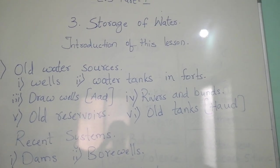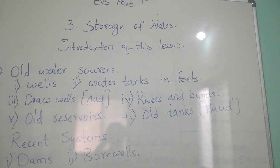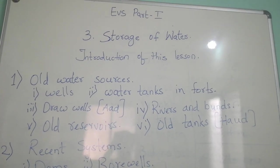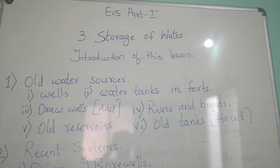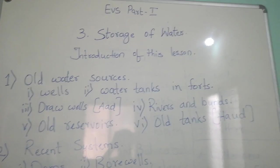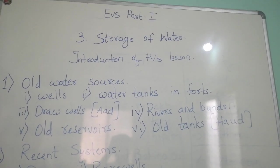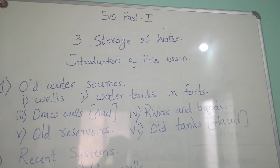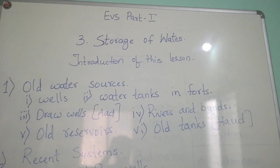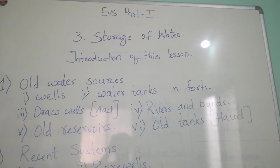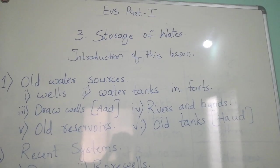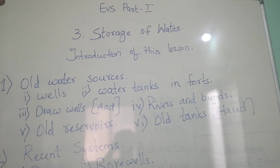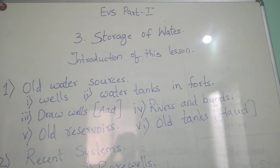The fourth one is rivers and buns. Earthen or masonry buns were built across the rivers to store their water. In the river, they would build buns to store the water. That is known as buns.